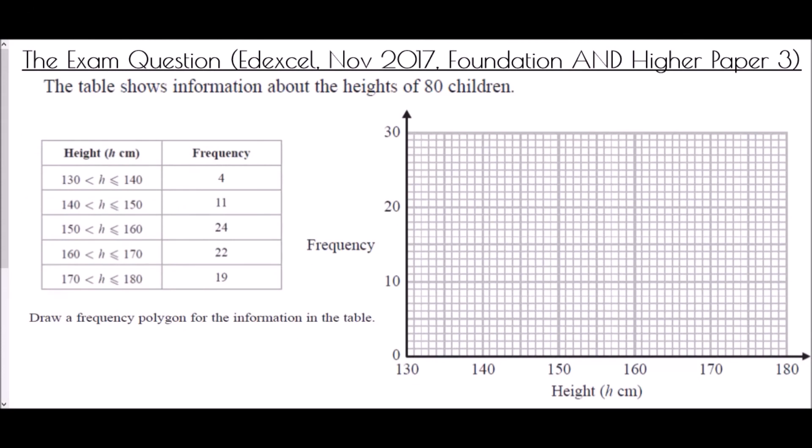And so we'll end with our exam question. And this came from the Edexcel paper in November 2017, and it was on foundation and higher paper 3. So the table shows information about the heights of 80 children, and we've been told all the frequencies for all of the groups. And all we've been asked to do is to draw a frequency polygon for the information in the table.